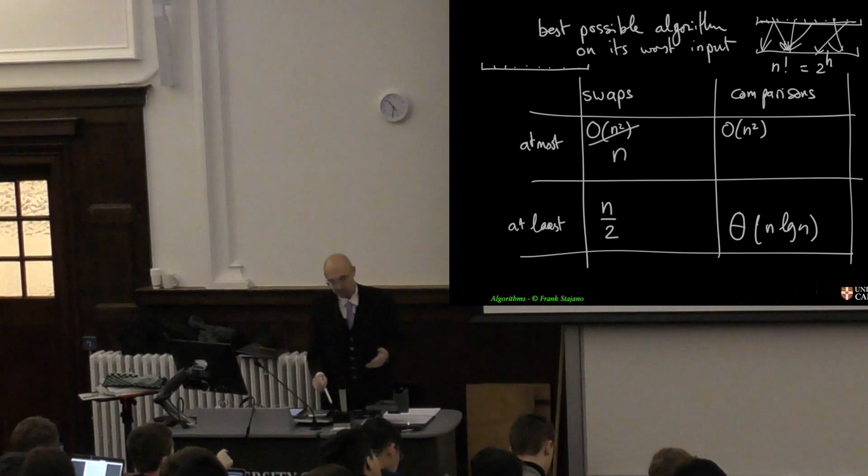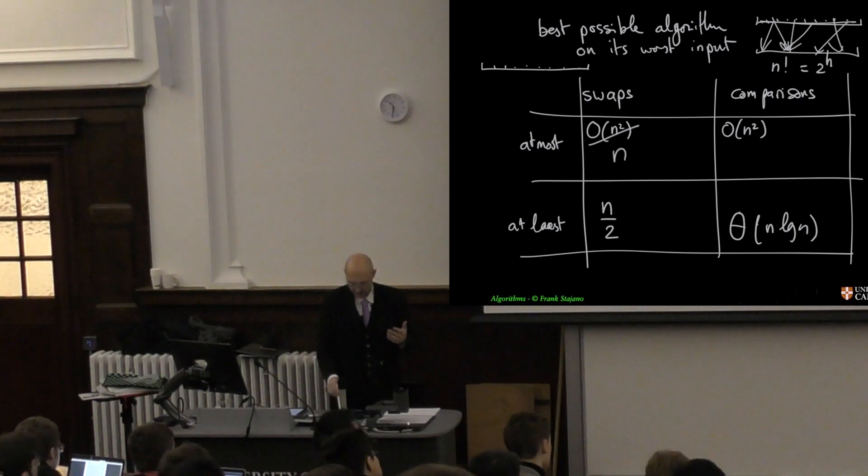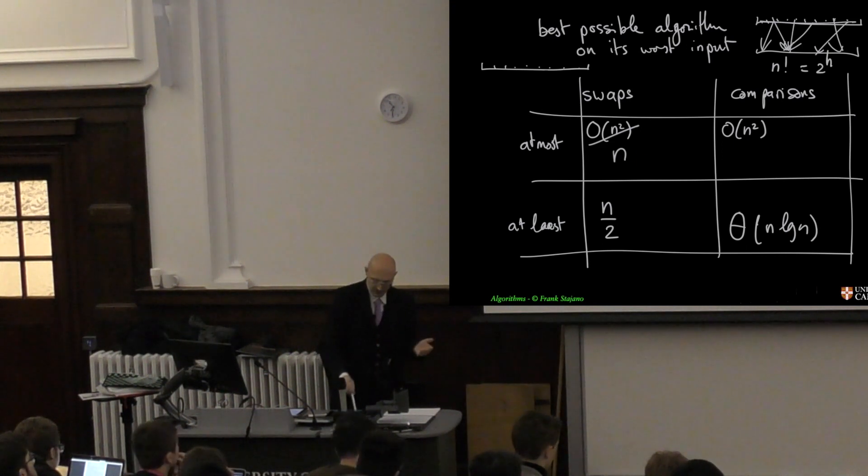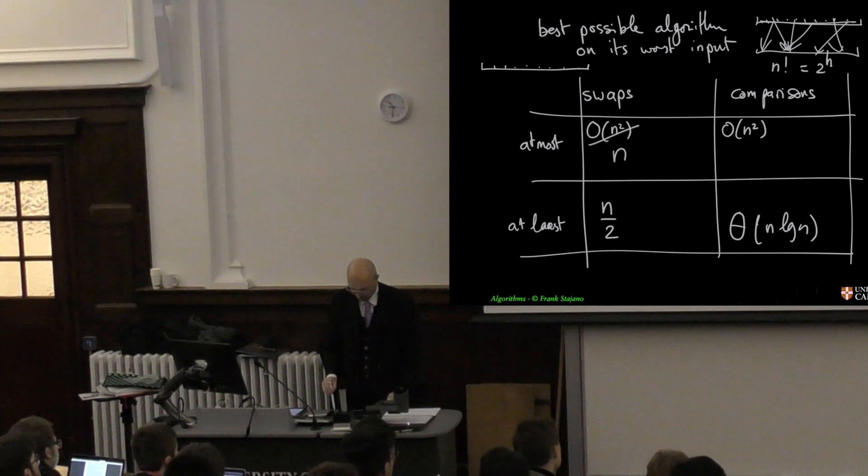And for comparisons you can also, you've already seen in the last term that there are ways of doing a comparison sort in n log n comparisons which reaches the same as this. And so in both cases we have a growth rate of big O over here and here big O n log n, and so we have established the optimum boundaries for complexity of comparison sort.